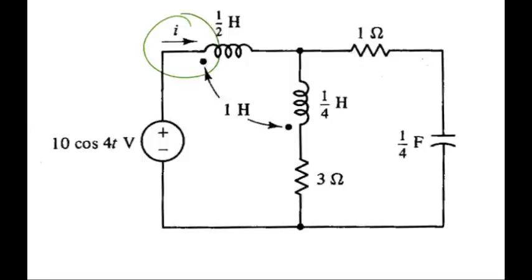Here we're looking for the current I, and this is a sinusoidal steady state current that we're looking for, so that means do a phasor analysis.